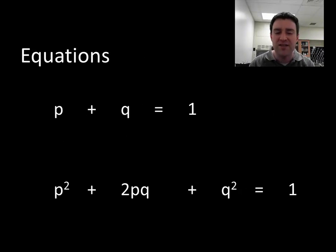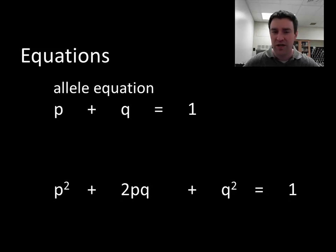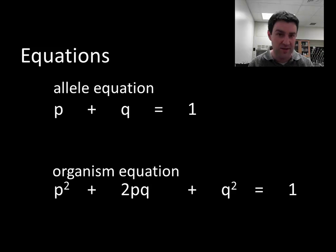So let's break it apart a little bit. We have two equations. I like to think of the top equation as the allele equation, giving information about the individual alleles themselves, whereas the bottom equation is giving us information about the organisms in the population.